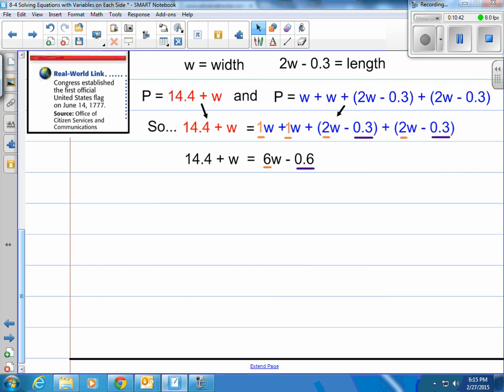So next step would be subtracting this W right here. It's a plus 1W. We usually would put a 1 there. Now we'll have minus 1W from both sides and we'll end up with 14.4 equals 5W minus .6.